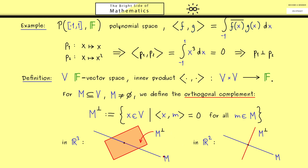Moreover, something you might immediately notice here is that in the case that M is a subspace, we have that the dimension of M plus the dimension of M orthogonal is equal to the dimension of the whole space. So you see, in this sense they complement each other in an orthogonal way. And indeed, in the next videos we will make this more precise when we talk about the orthogonal projections. So I really hope you meet there again, and have a nice day. Bye bye!